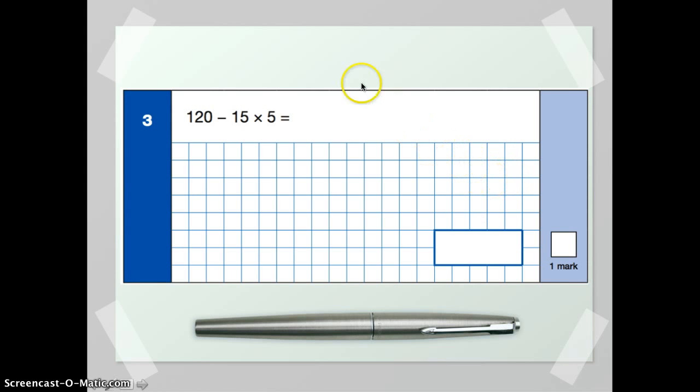In this example, we're looking at orders of operations. If you look at the question, we've got 120 subtract 15 multiplied by 5. Now, whenever you've got multiple operations, you need to be thinking about what order you need to sort these out. And when you think about this, the best way is to remember your Bodmas rules.